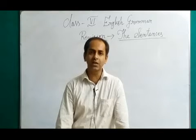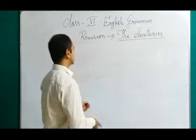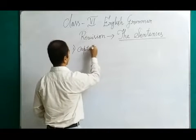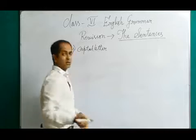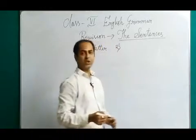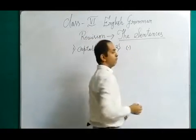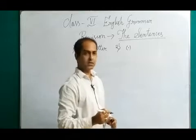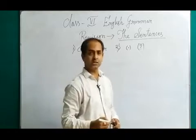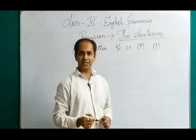A sentence must have certain features. First, a sentence must start with a capital letter. Next, a sentence must end with a punctuation mark — a full stop for imperative and declarative sentences, a question mark for interrogative sentences, and a mark of exclamation for exclamatory sentences.